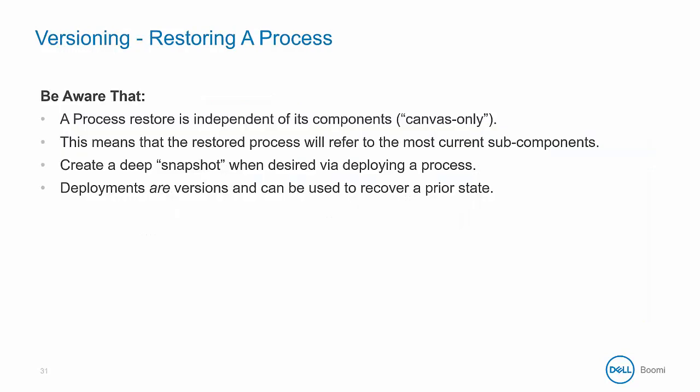Here are a few helpful ideas to consider. Remember that a process is a component — it is independent of the other components that it references. So essentially, restoring a revision of a process component is like restoring the process canvas only; it will reference the most current subcomponents. You can't roll back an entire process including all dependencies to a single point in time simply by rolling back the canvas, because each component is independent.